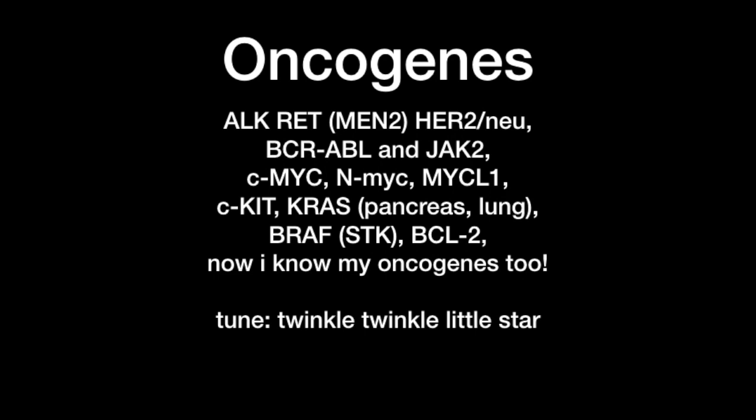HER2-NU gives rise to breast and gastric carcinomas — you probably already know this from question stems. BCR-ABL gives rise to chronic myelogenous leukemia, as well as, in a rarer form, acute lymphoid leukemia. JAK2, the other tyrosine kinase, gives rise to chronic myeloproliferative disorders — an umbrella term that covers CML, so it's related to BCR-ABL.